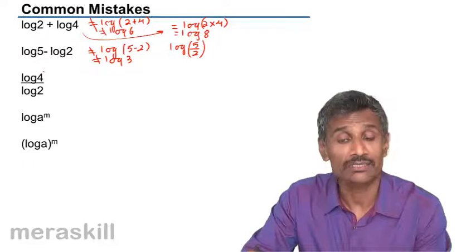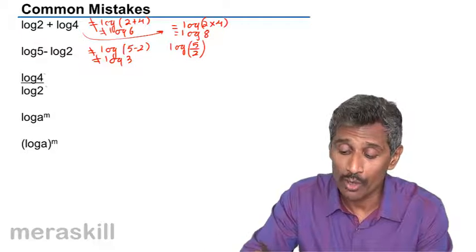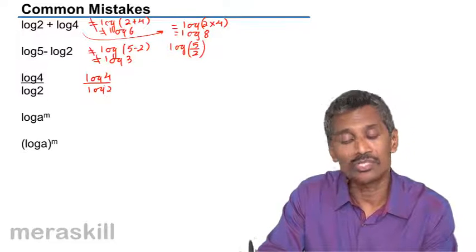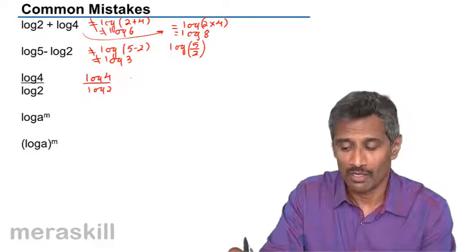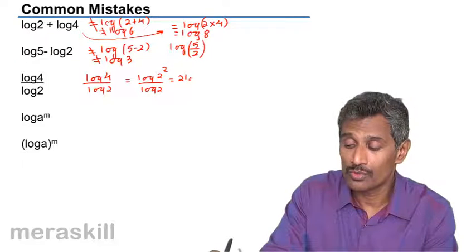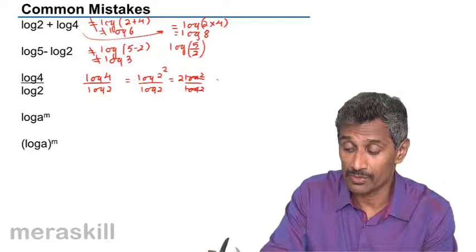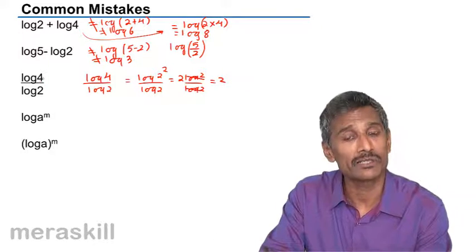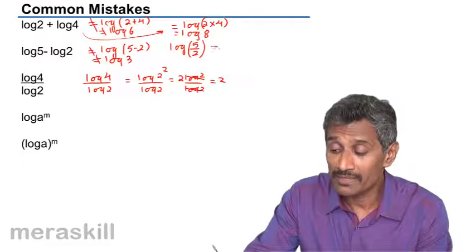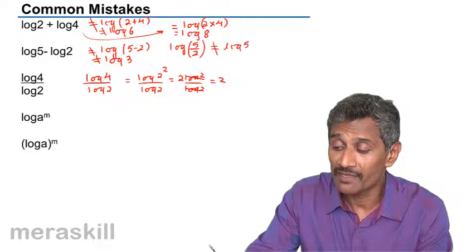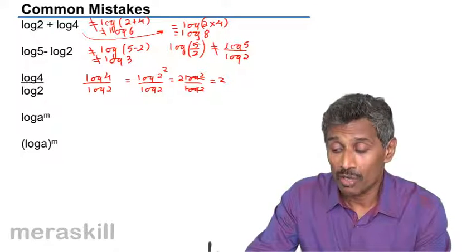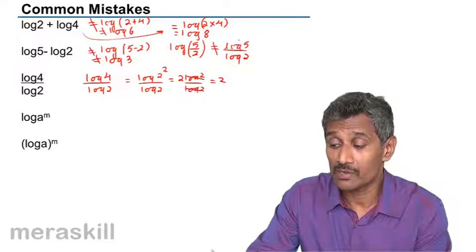Now we need to be very careful: log 4 divided by log 2, and log(4/2), are two different things. Log 4 upon log 2 is just log 4 upon log 2. At most you can write it as log(2²) upon log 2, which is 2·log 2 divided by log 2 = 2. But log(5) divided by log(2) has no further simplification. Logarithm of one number divided by another is not the same as the logarithm of a number divided by the logarithm of another number.